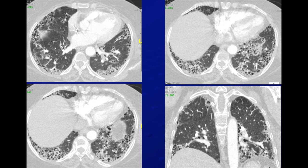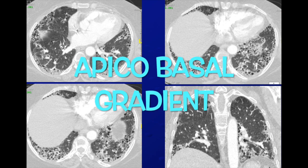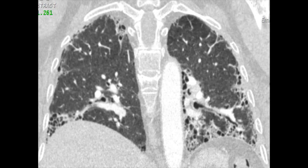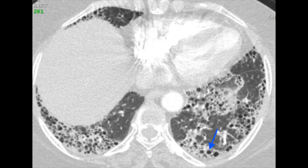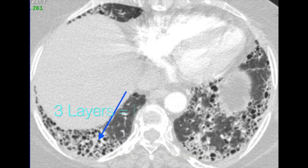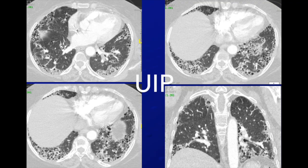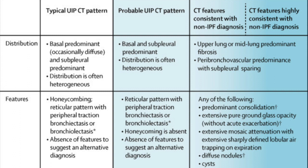Looking at this case: is this honeycombing? Yes. Is there an apicobasal gradient? Yes — there is more in the bases than the apices. There is traction bronchiectasis and cyst formation. But when it comes to UIP, there are categories: probable, typical, or non-consistent with UIP. This is a newer and important classification that chest physicians will ask about.